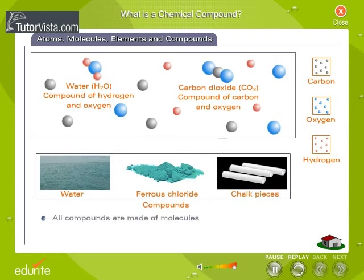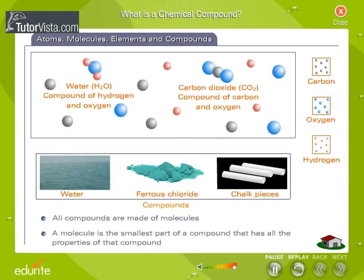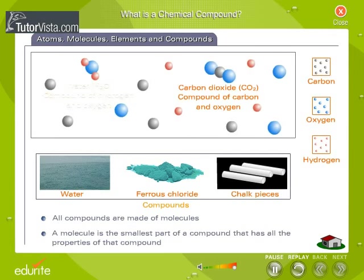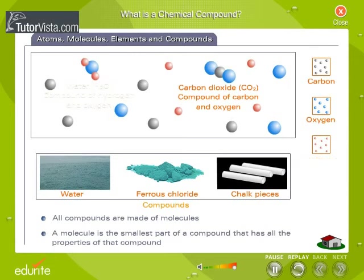All compounds are made up of molecules. A molecule is the smallest part of the compound that has all the properties of that compound. For example, a molecule of water is made up of two atoms of hydrogen and one atom of oxygen.